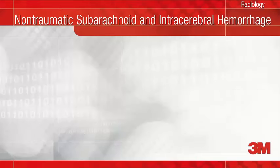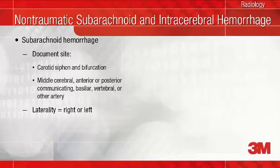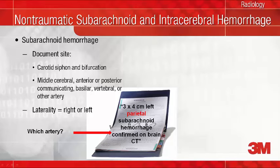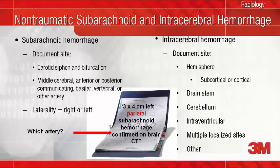As with cerebral infarction, additional documentation that will be needed for patients with non-traumatic subarachnoid hemorrhage is the artery affected, as seen here on the left. Documentation of sites other than the artery, such as parietal, results in a query or the reporting of a code that states 'unspecified intracranial artery.' As seen here on the right, non-traumatic intracerebral hemorrhage requires documentation of the actual anatomic site of the brain affected, such as the subcortical or cortical hemisphere.